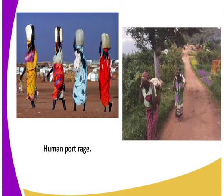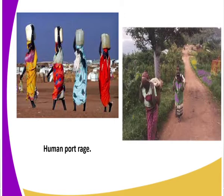For example, the Kikuyu community could carry goods on their back, and other communities could carry goods using their head. In the first image you can see people carrying jerrycans on their head, and in the second image you can see people carrying goods on their back. That is what we call human porterage.